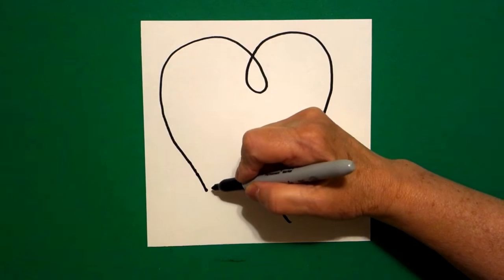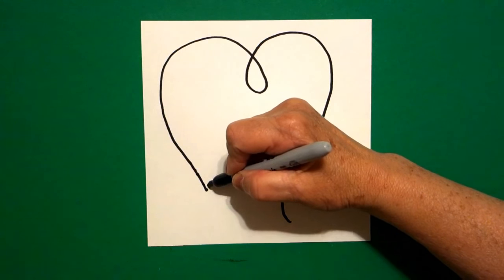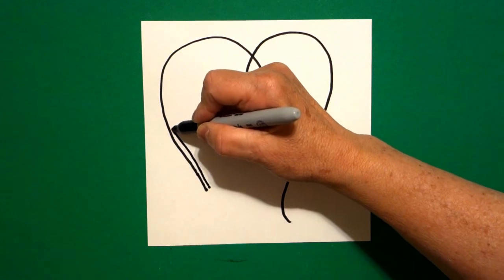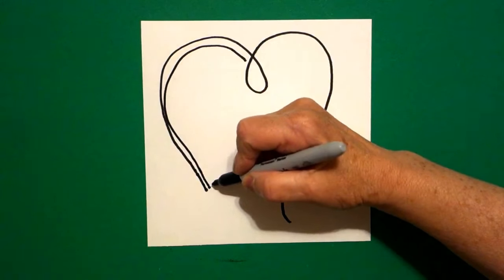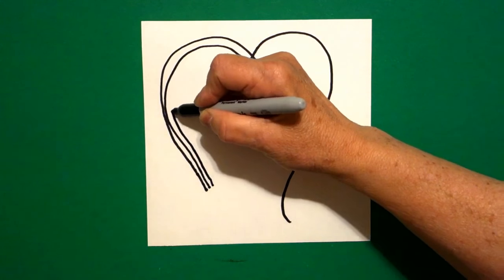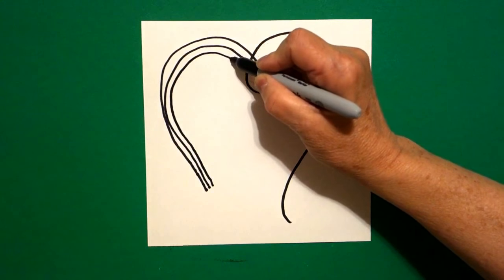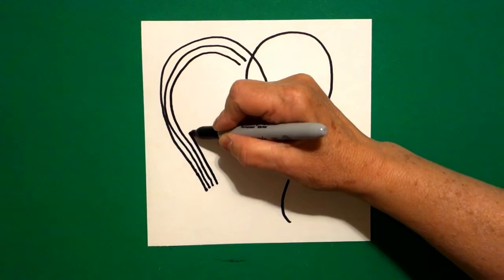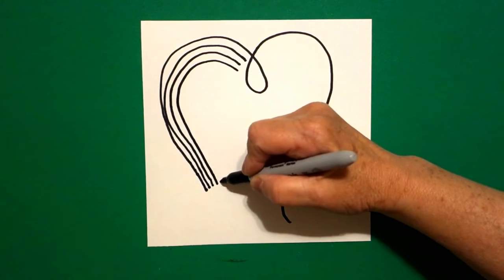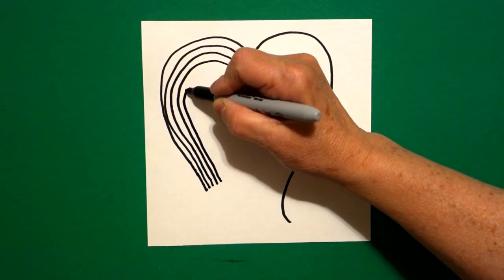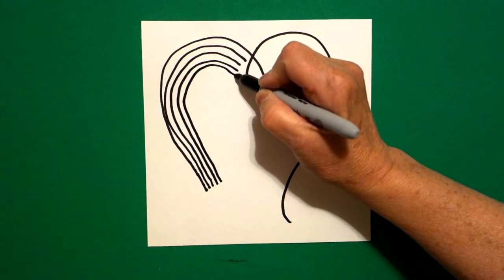I come back in to where I started and I'm going to draw four lines. So I draw one, two, three, four lines. And you want to kind of keep them even.